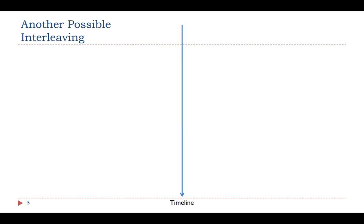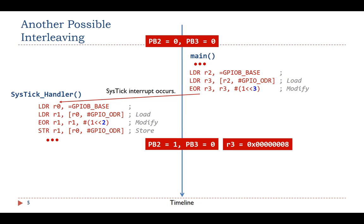However, things may go terribly wrong. The following is one example. If the SysTick interrupt arrives before the main function completes the load-modify-store sequence, the processor executes the SysTick interrupt handler in response to the interrupt. After the interrupt exits, PB2 has been successfully toggled. However, the old output of pin PB2 is also stored in register R3.